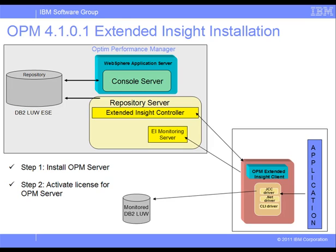The controller also knows about all available Extended Insight Monitoring Servers. We will specify a port number for the controller when we activate Extended Insight on Optum Performance Manager and when we configure the Extended Insight client later in this demo. There is one set of metric collectors per monitored database, which collect additional information about transactions and SQL statements directly from the monitored database, combine it with data from the monitoring server, and store it in the repository database.